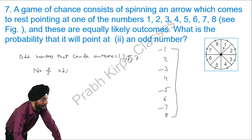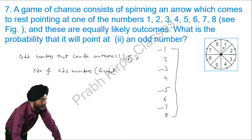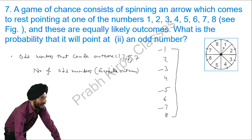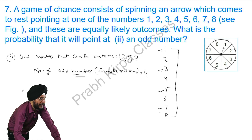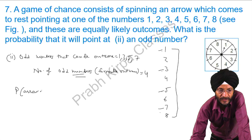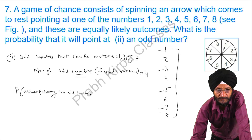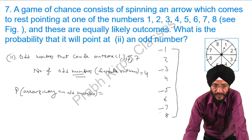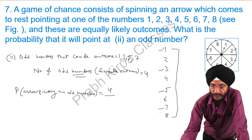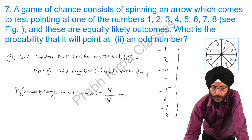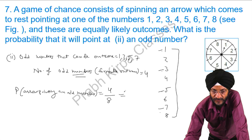The number of odd numbers, or number of favorable outcomes, are 4 — that is 1, 3, 5, and 7. The total number of possible outcomes are 8. So the probability of the arrow pointing at an odd number is 4 over 8, which equals 1 over 2.